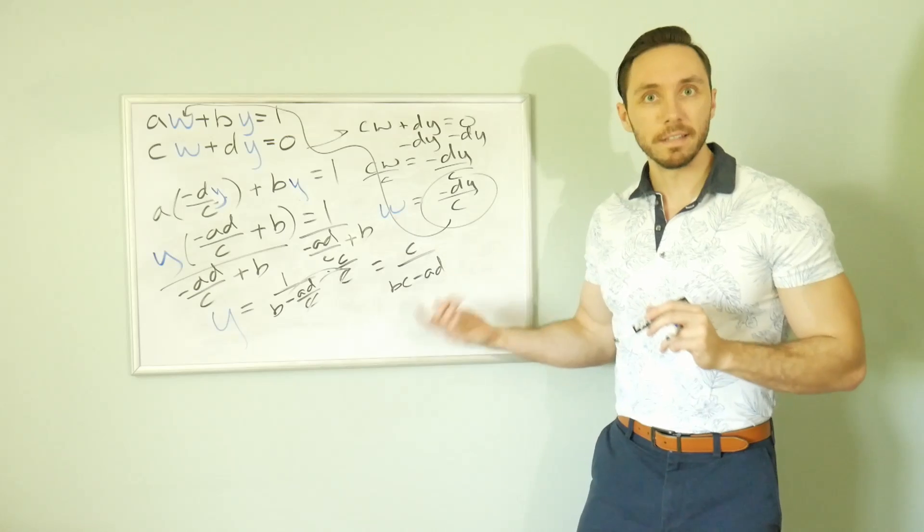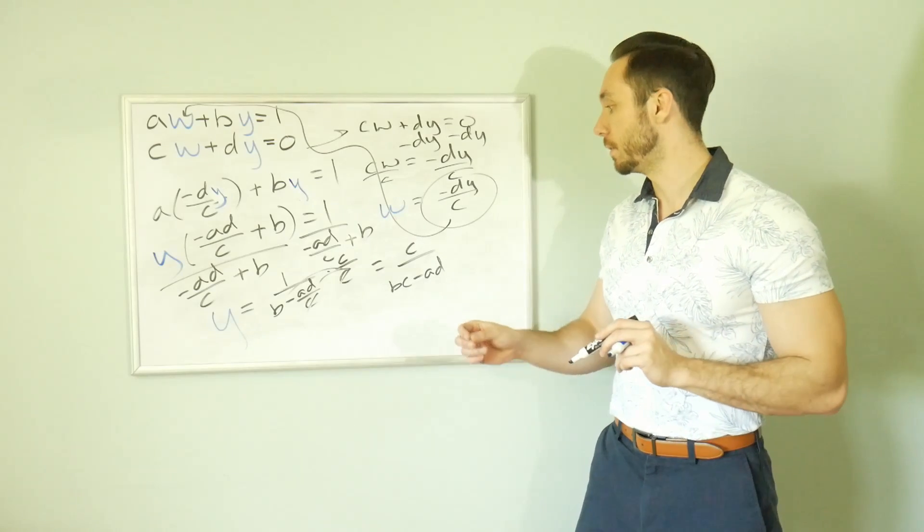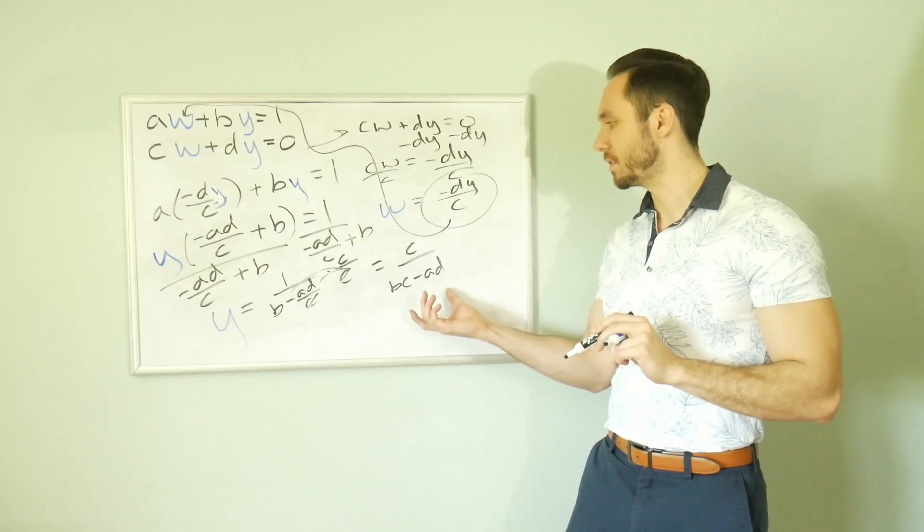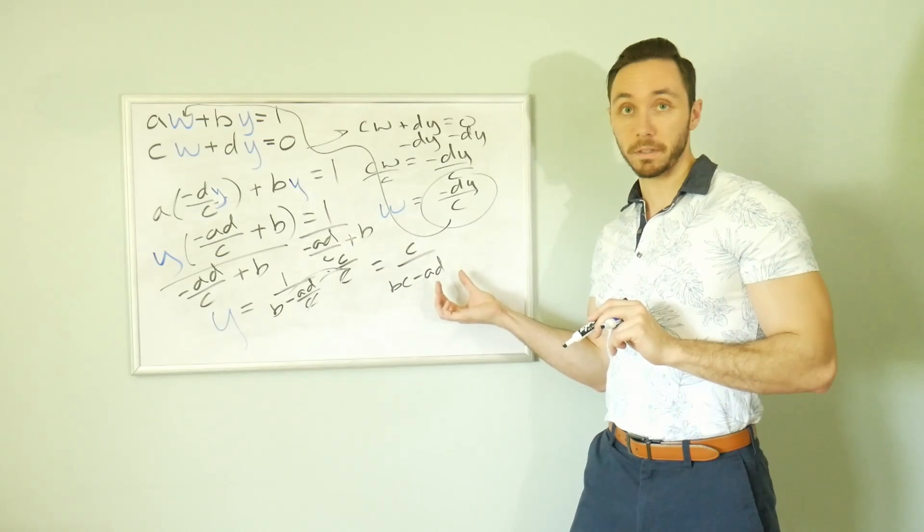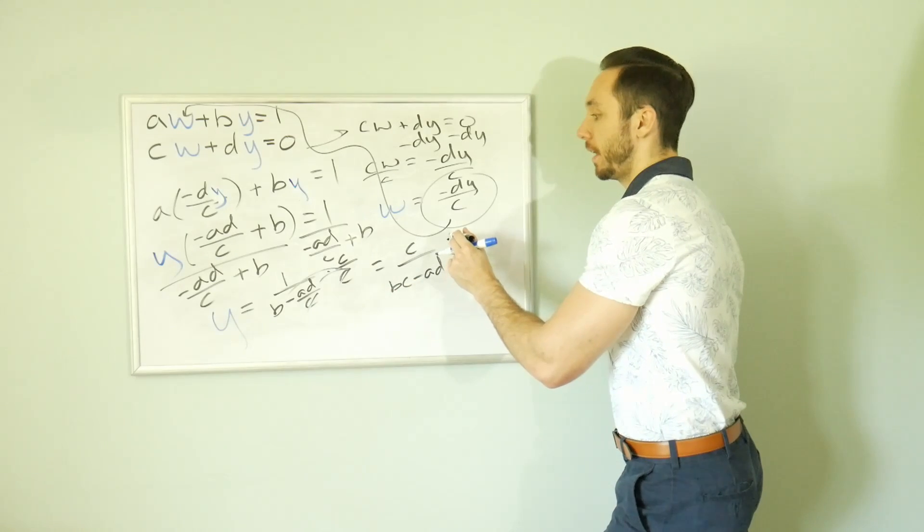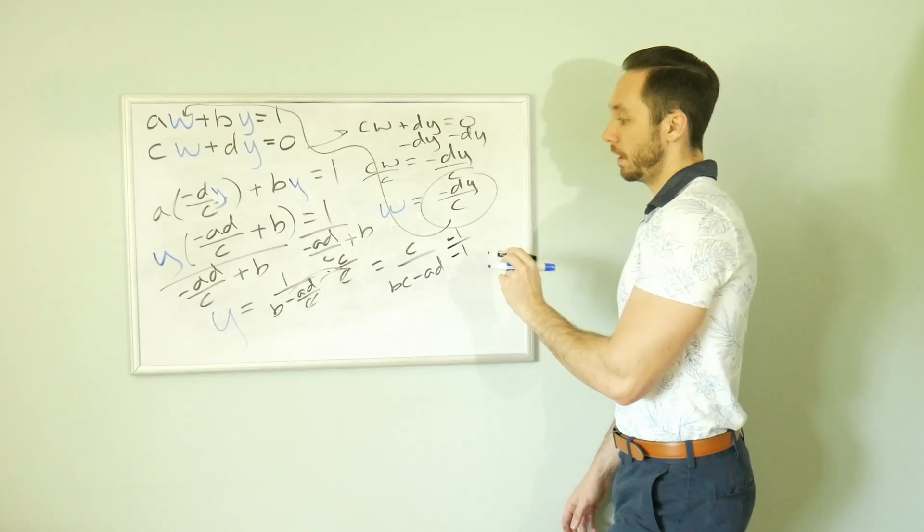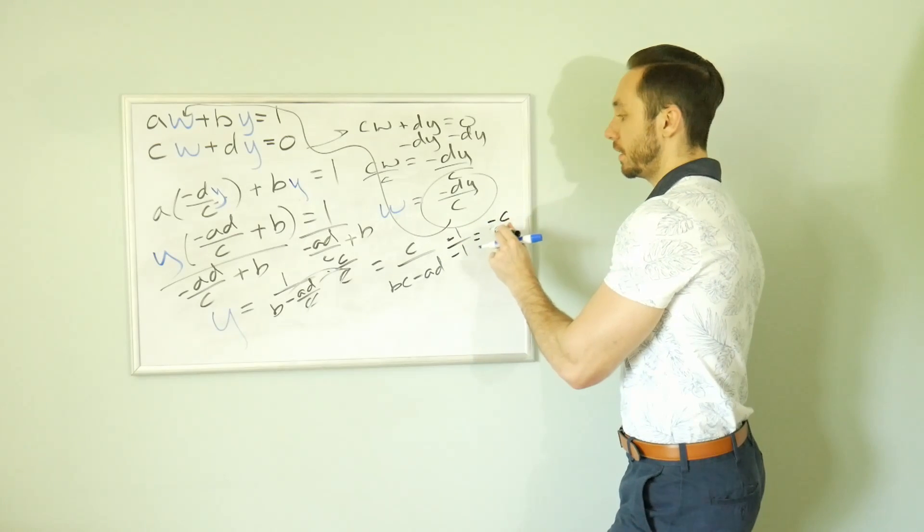We actually kind of don't like this. This denominator isn't the same denominator we've been getting in the last two. So actually what we're going to do is we're going to divide out a negative. That way these will flip. Right? This will turn negative. This will turn positive.